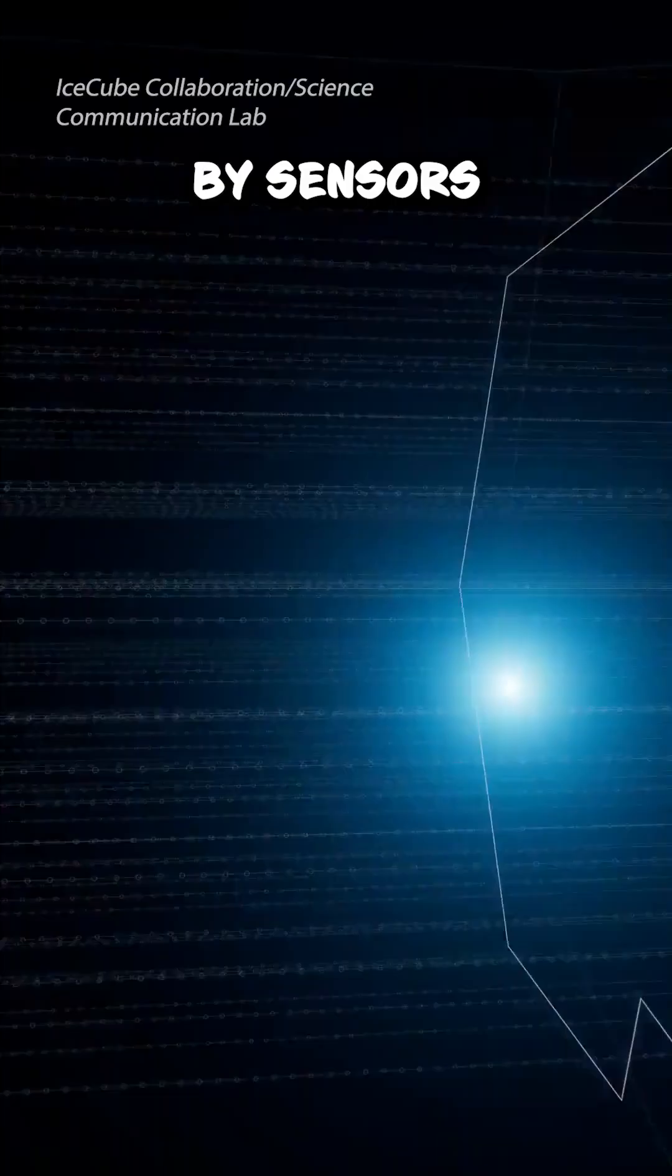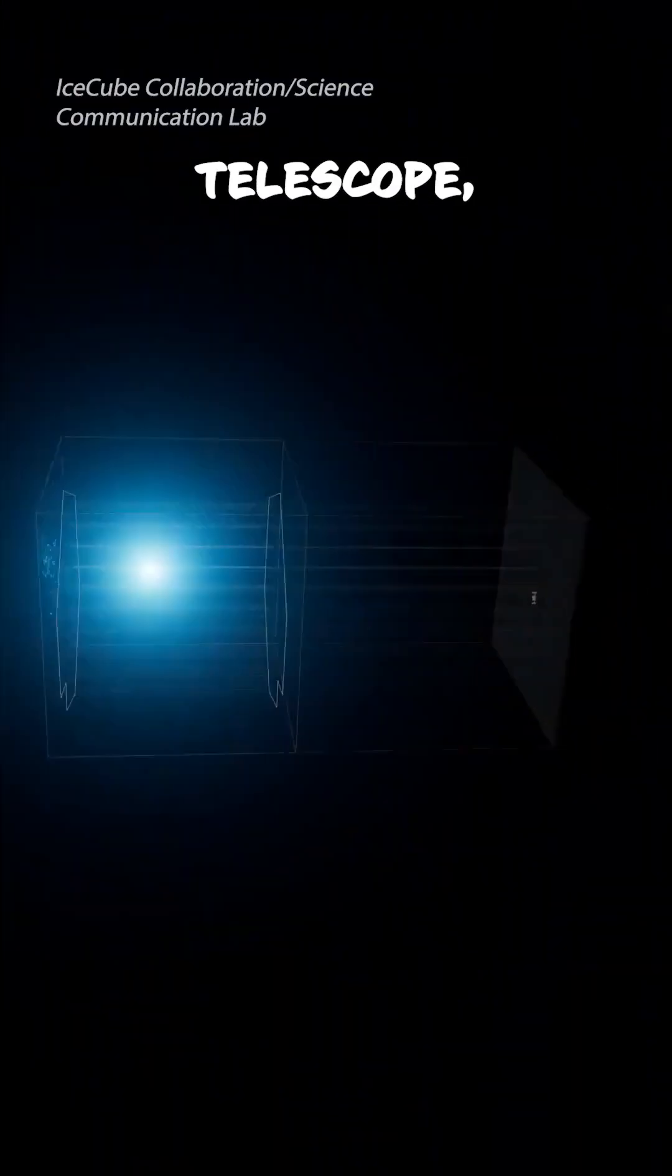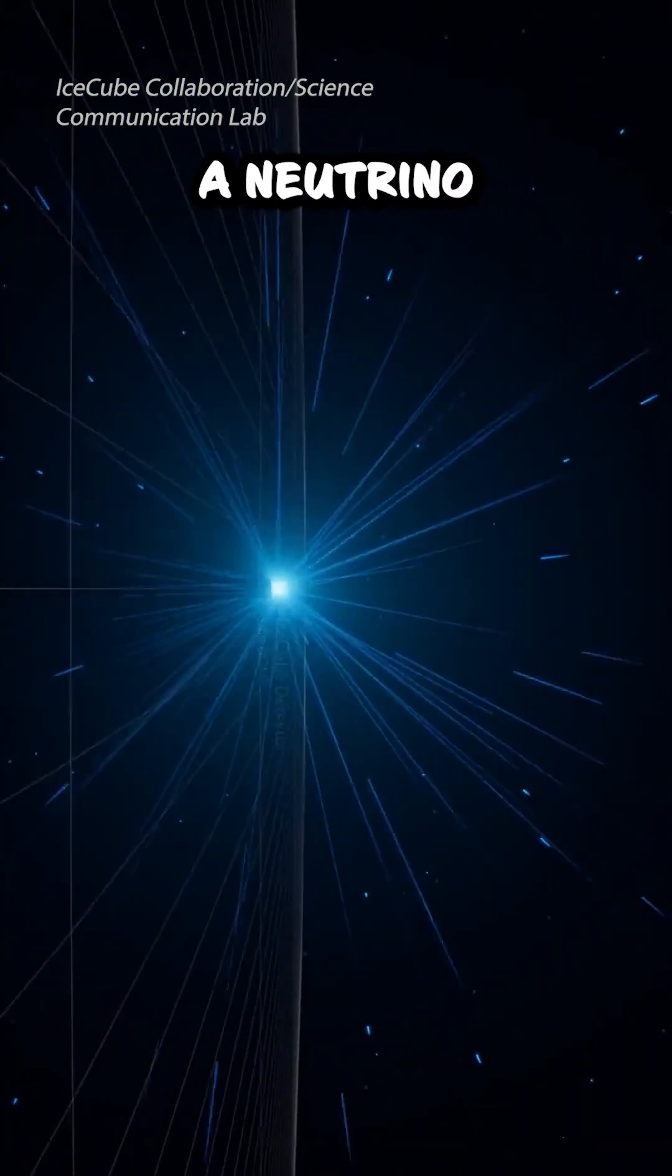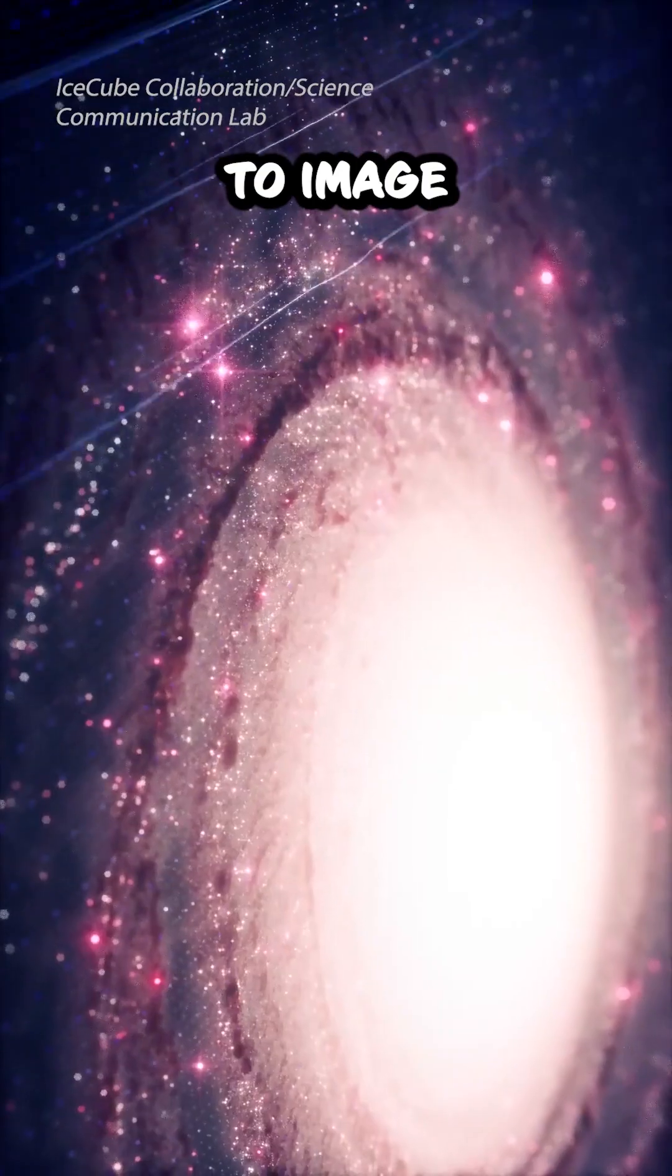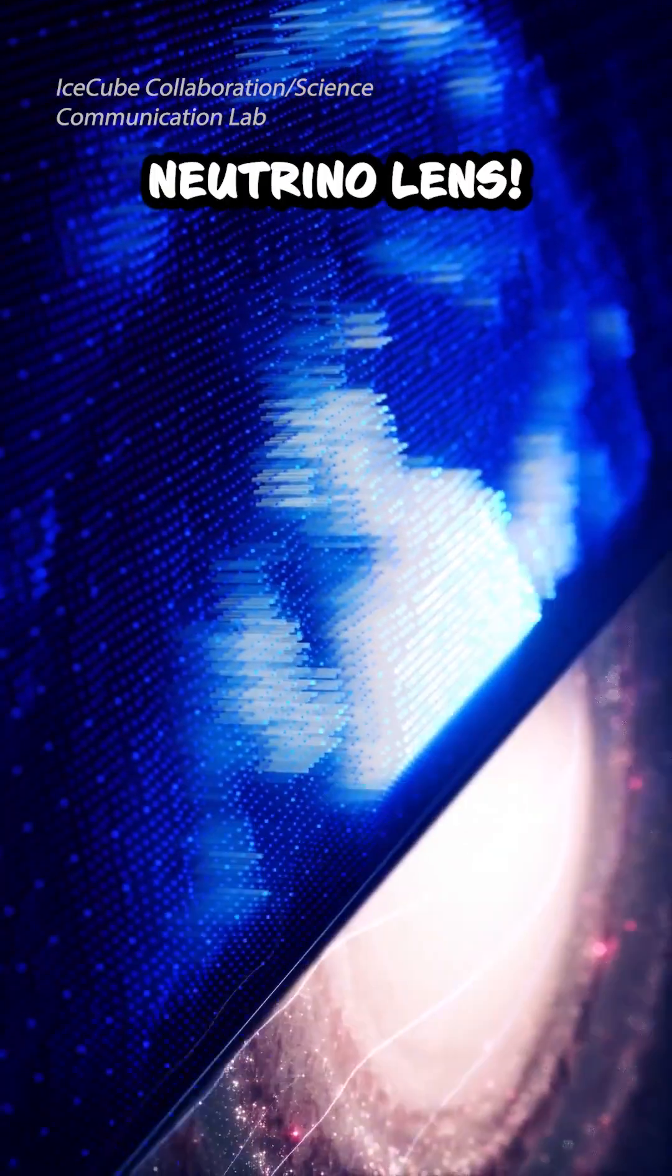These imprints are detected by sensors inside of the ice cube telescope, which allows scientists to trace a neutrino back to where it came from, which then allows scientists to image the entire galaxy through a neutrino lens.